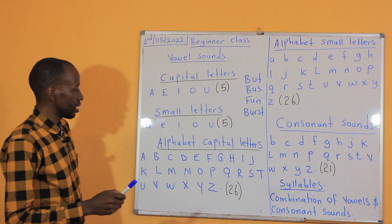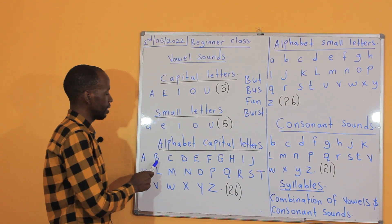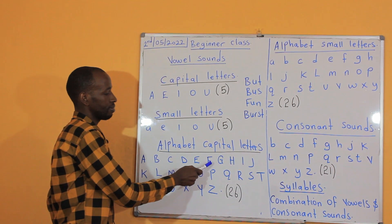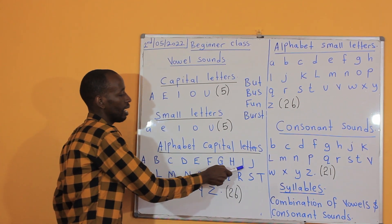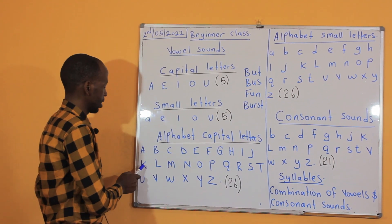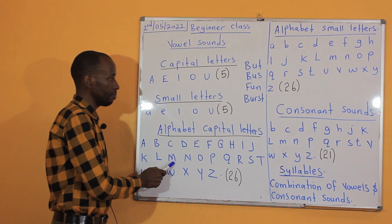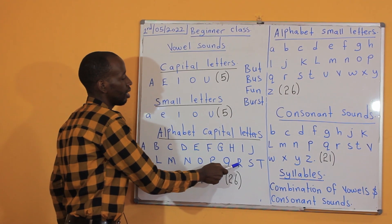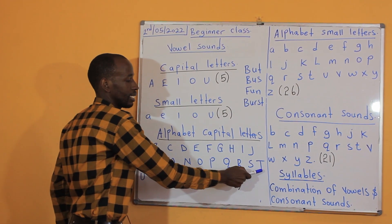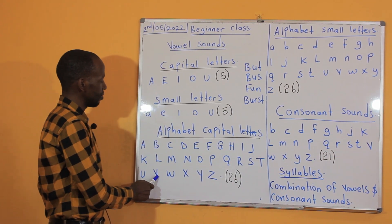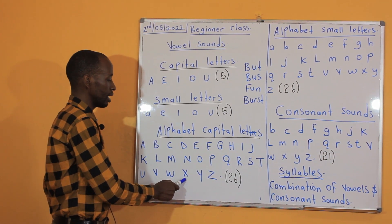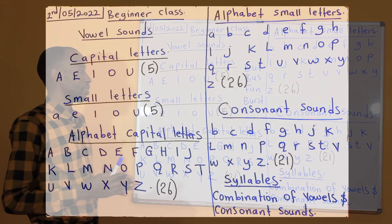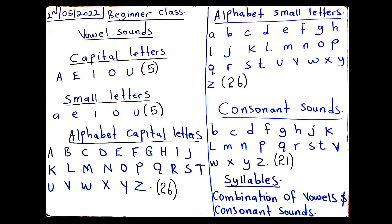Let me repeat once again: A, B, C, D, E, F, G, H, I, J, K, L, M, N, O, P, Q, R, S, T, U, V, W, X, Y, Z. That's how we can pronounce capital alphabet letters.